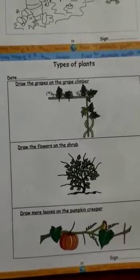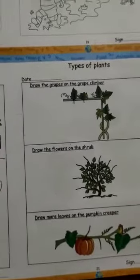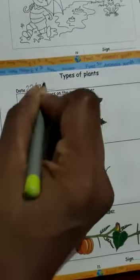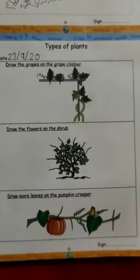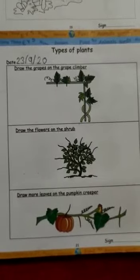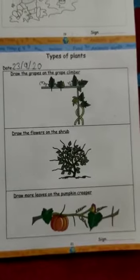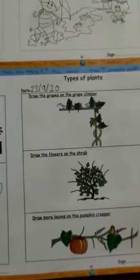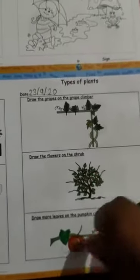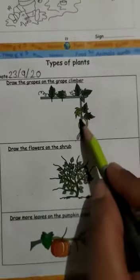Got this page. The date is the same — 23, 9, 20. What do you see here, students? Types of plants. Today we are going to learn about types of plants. We see many different kinds of plants around us — they have different shapes and different sizes. First type of plant: which type is it?